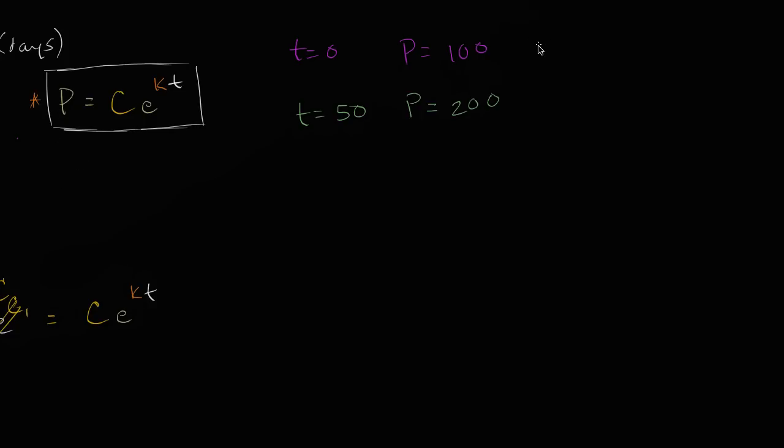Based on this first piece of information, we could say that 100 must be equal to C times E to the K times zero. Well, that's just going to be E to the zero, which is just one. So this is just the same thing as C times one. And just like that, we have figured out what C is.